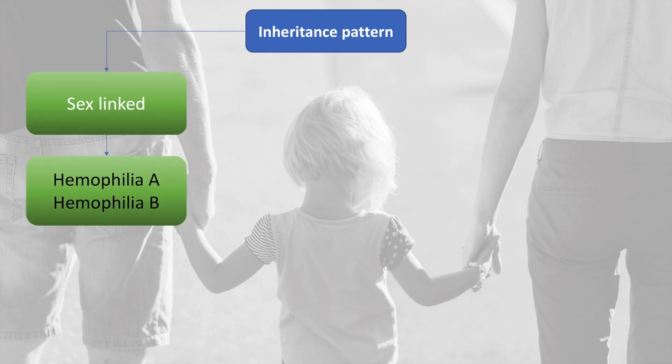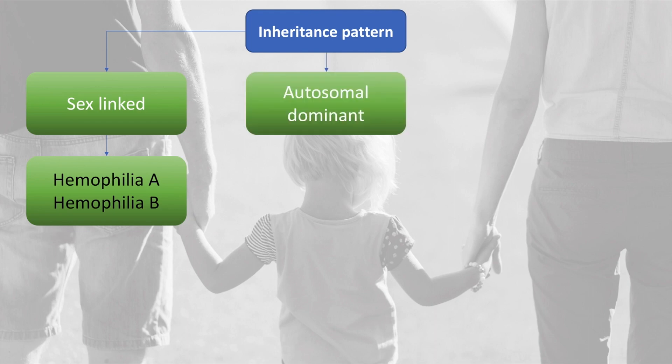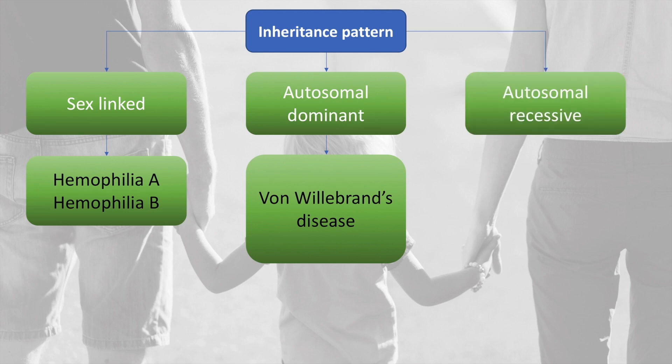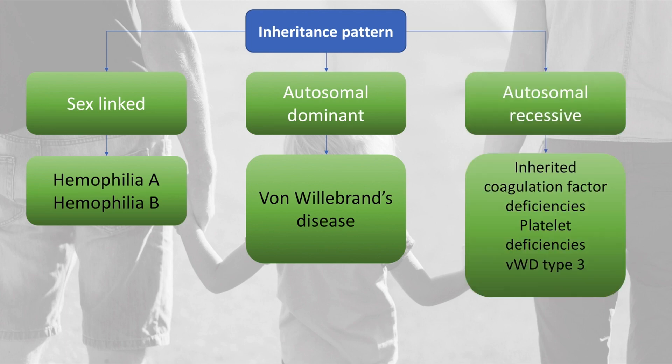The inheritance pattern may be sex-linked, in which case it is hemophilia A and B. It may be autosomal dominant, in which case it is von Willebrand's disease, or it may be autosomal recessive, in which case it is inherited coagulation factor deficiency or platelet deficiencies. Specifically, von Willebrand's disease type 3 is autosomal recessive.